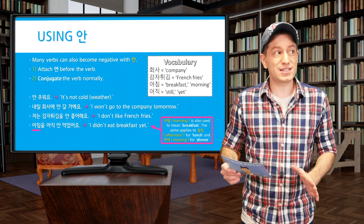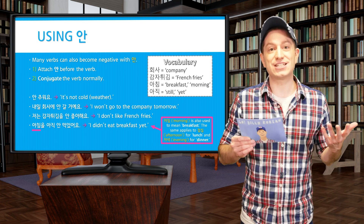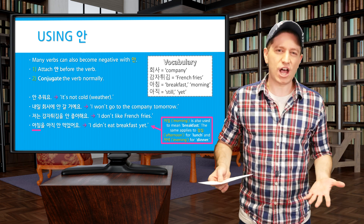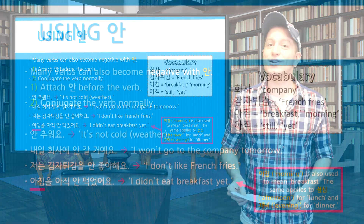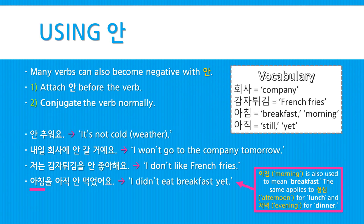Some verbs can also become negative just by attaching 안. To do that, attach 안 before a verb and then conjugate it normally. Examples: 안 추워요 — It's not cold. 내일 회사에 안 갈 거예요 — I won't go to the company tomorrow. 저는 감자튀김을 안 좋아해요 — I don't like french fries. 아침을 아직 안 먹었어요 — I did not eat breakfast yet. Note that 아침 literally means 'morning' but can also mean 'breakfast.' The same applies for 점심 (afternoon/lunch) and 저녁 (evening/dinner).